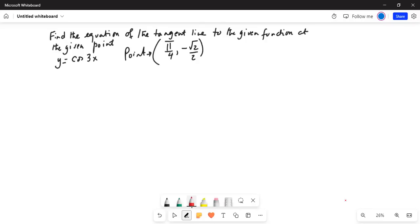Find the equation of the tangent line to the given function at the given point. The function is y equal to cosine 3x.